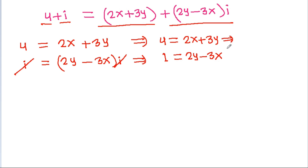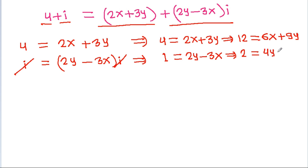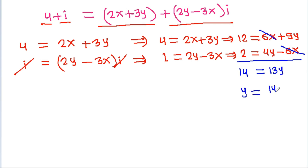If we multiply the first equation by 3, we get 12 = 6x + 9y. If we multiply the second equation by 2, we get 2 = 4y - 6x. Adding both equations, 6x cancels, giving 14 = 13y, so y = 14/13.